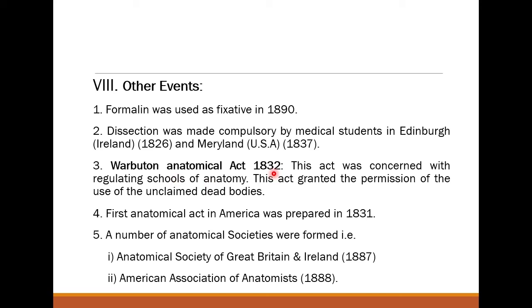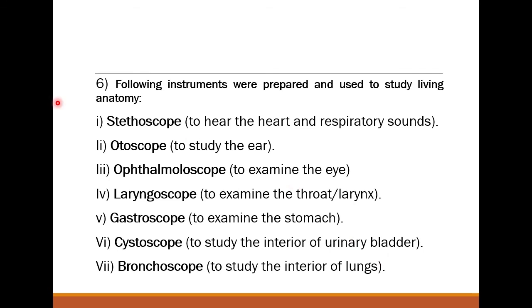The Warburton Anatomical Act of 1832 was concerned with regulating schools of anatomy. This act granted permission to use unclaimed dead bodies in medical schools for dissection of cadavers. The first anatomical act in America was prepared in 1831. A number of anatomical societies were formed: the Anatomical Society of Great Britain and Ireland in 1887, and the American Association of Anatomists in 1888.